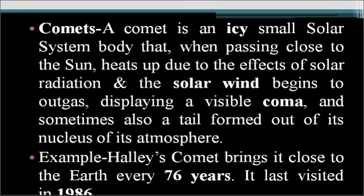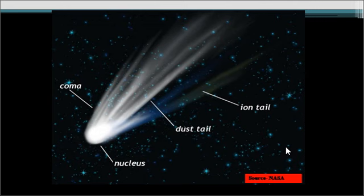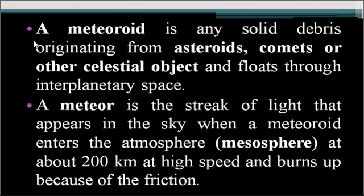The comet is a very important topic. A comet is a solar system body that, when passing near the sun, starts outgassing its atmosphere from its nucleus, giving it a visible tail or coma. Now, meteoroid is also very important. On 19 April 2020, news flashed across all channels that a great meteoroid was approaching Earth. This term is frequently seen in various news, making it an important topic.